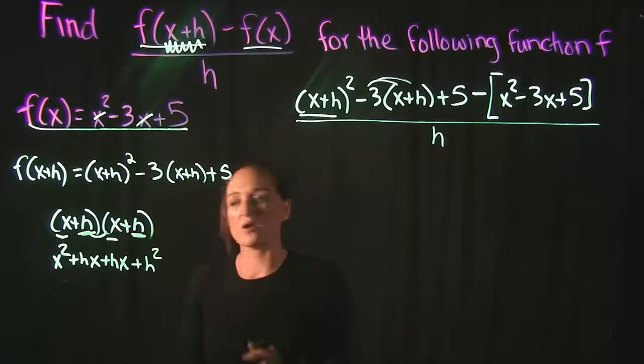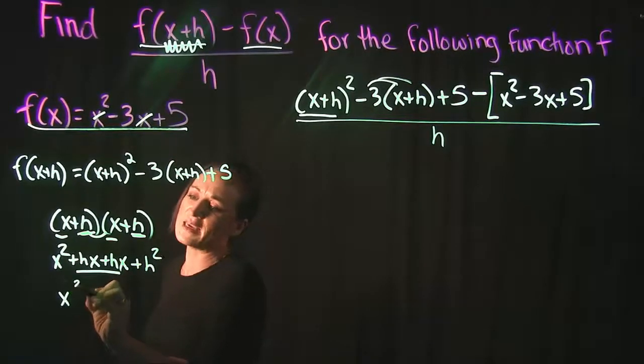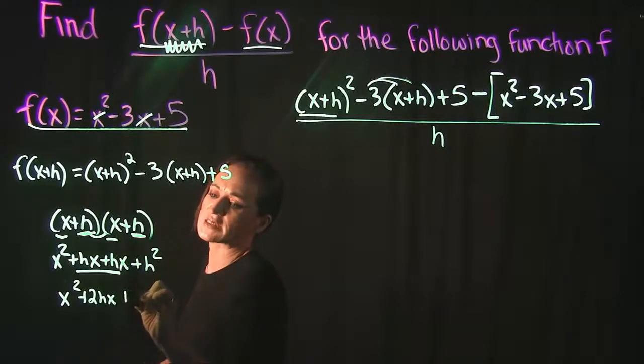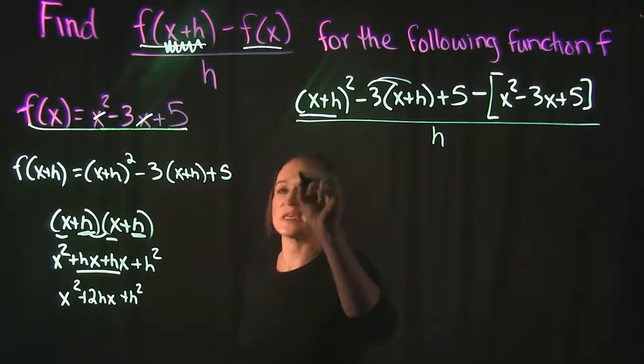Your two middle terms are your like terms that combine. So when we do that, we're left with x squared plus 2hx plus h squared. So that's this first piece here.